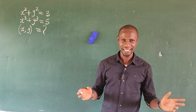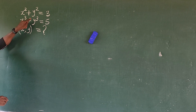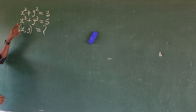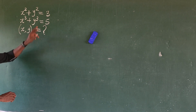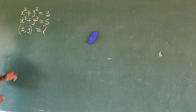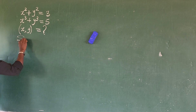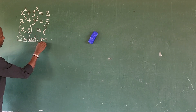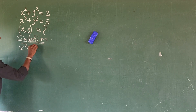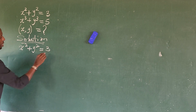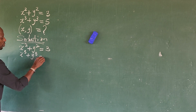So let's go into today's challenge. The question is: x squared plus y squared equals 3 — that is equation 1 — and x cubed plus y cubed equals 5 — that is equation 2.